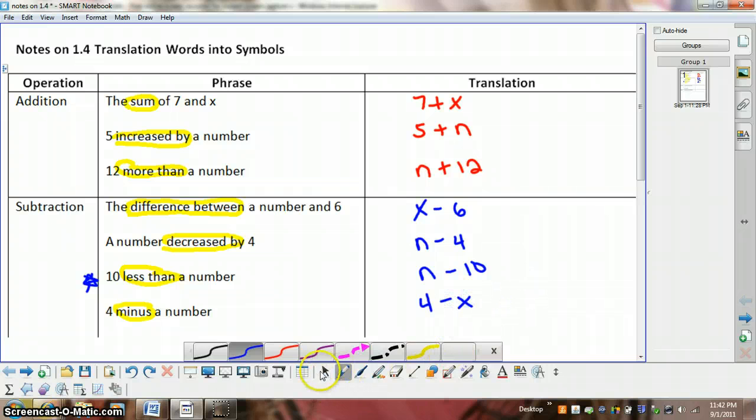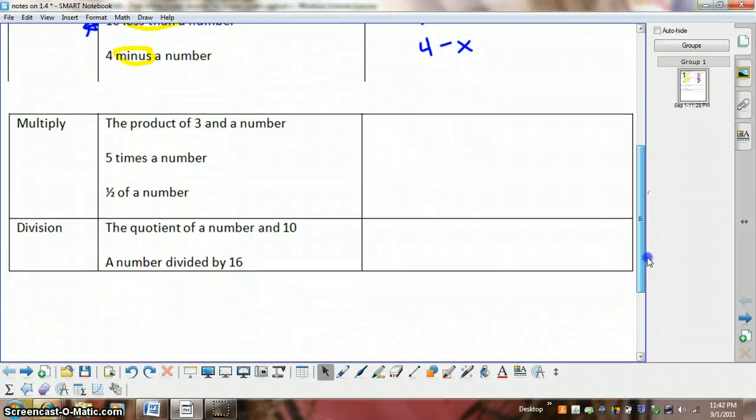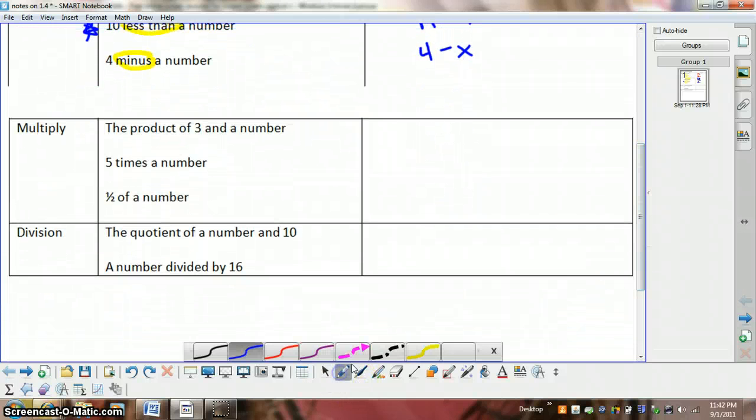Let's take a look at a few more examples now with multiplication and division. So here's the words that mean multiply. We have product, times, and of.